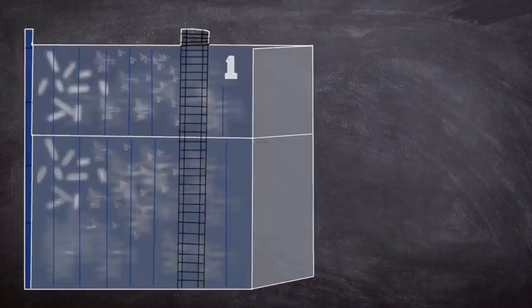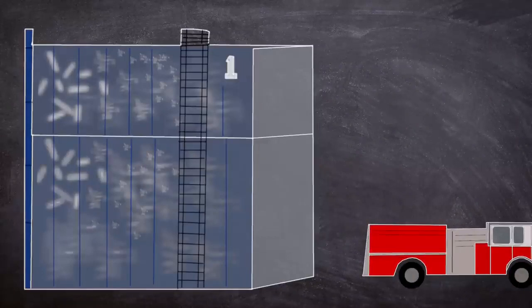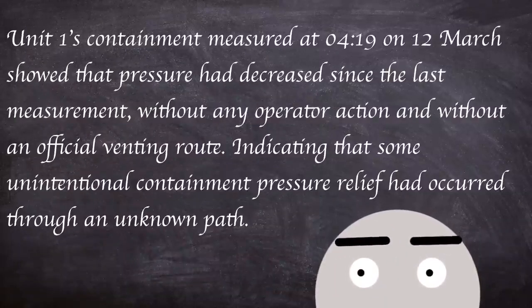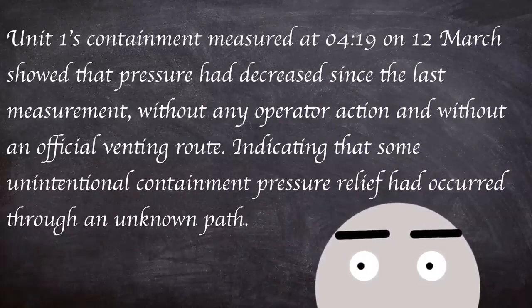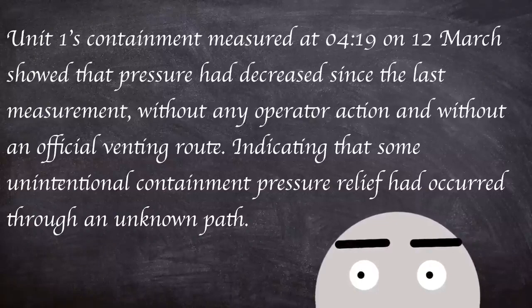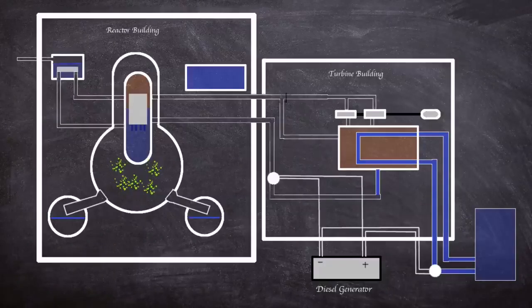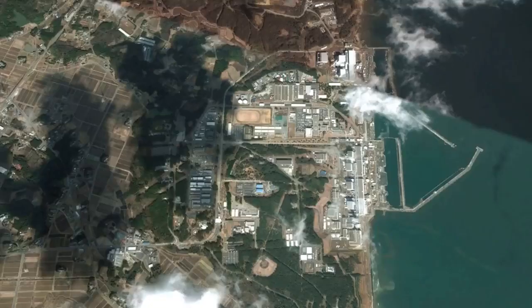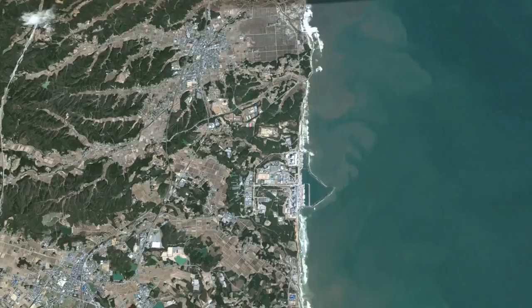At 4 am an alternate cooling system was put into operation using fire trucks pumping seawater into unit one as the vessel pressure had reduced. Unit one's containment measurement at 4 19 am on the 12th of march showed that pressure had decreased since the last measurement without any operator action and without an official venting route indicating that some unintentional containment pressure relief had occurred through an unknown path. This coupled with an increase in radiation levels hinted at reactor vessel damage. Because of this the government extended the evacuation zone to 10 kilometers.